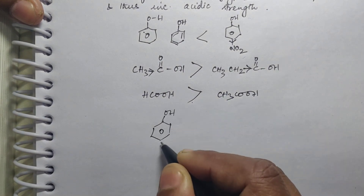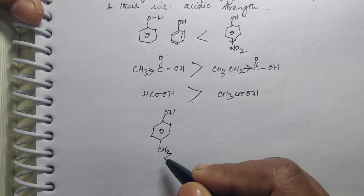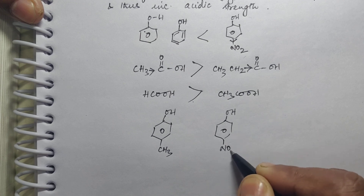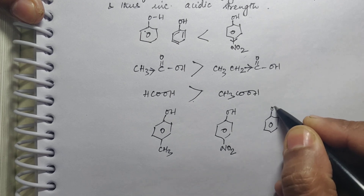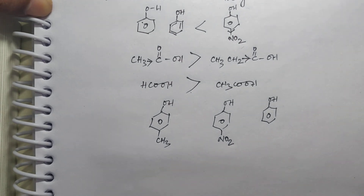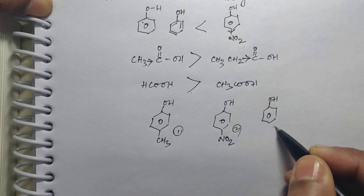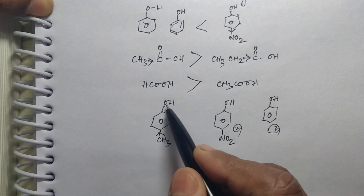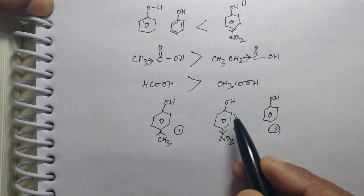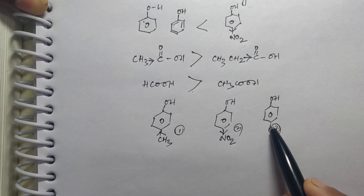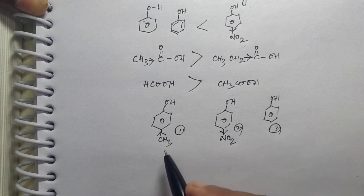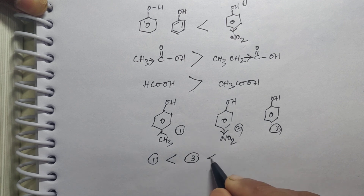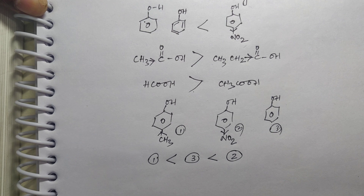Now say you have to compare the acidic strength of: (1) 4-methylphenol (para-methylphenol), (2) para-nitrophenol, and (3) phenol. The CH3 group is electron releasing so it will decrease OH polarity. The NO2 group is electron withdrawing so it will increase OH polarity. Phenol has neither an extra electron withdrawing nor electron releasing group. So 4-methylphenol will be less acidic than phenol, and phenol will be less acidic than paranitrophenol. That is the order of acidic strength.